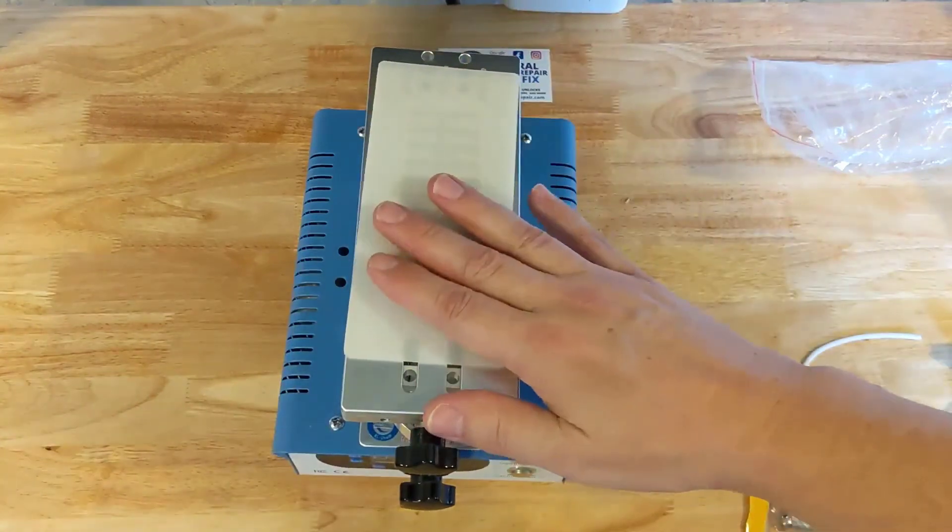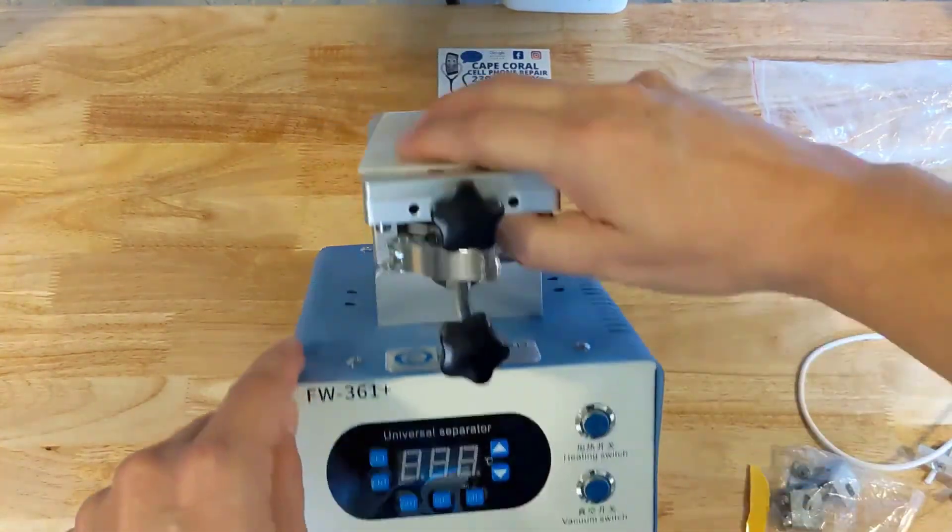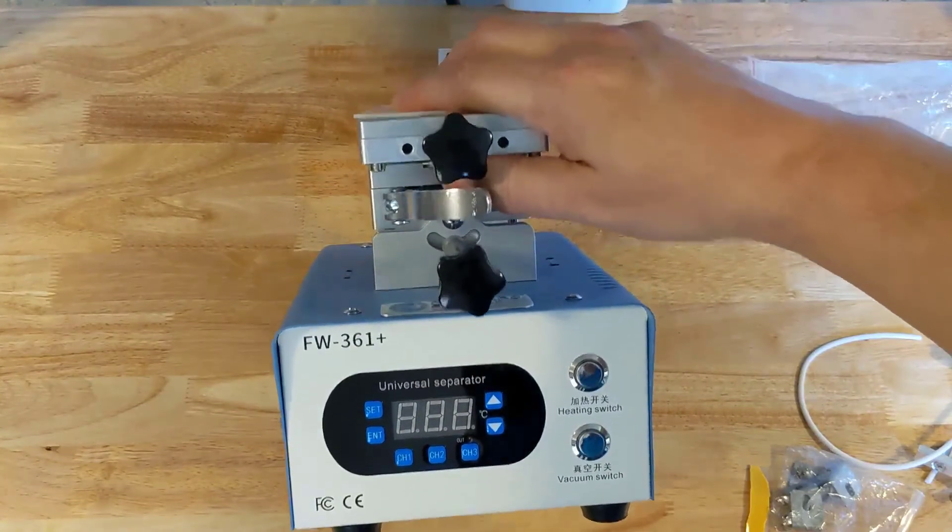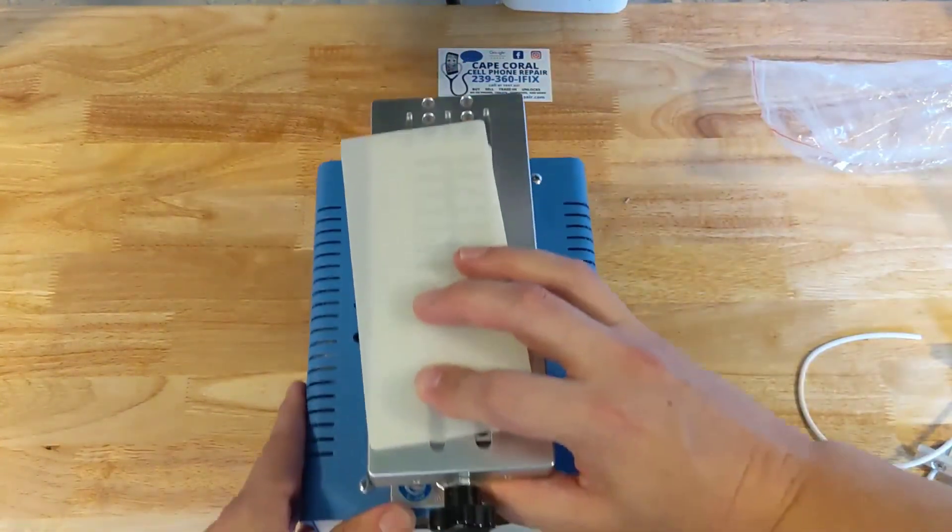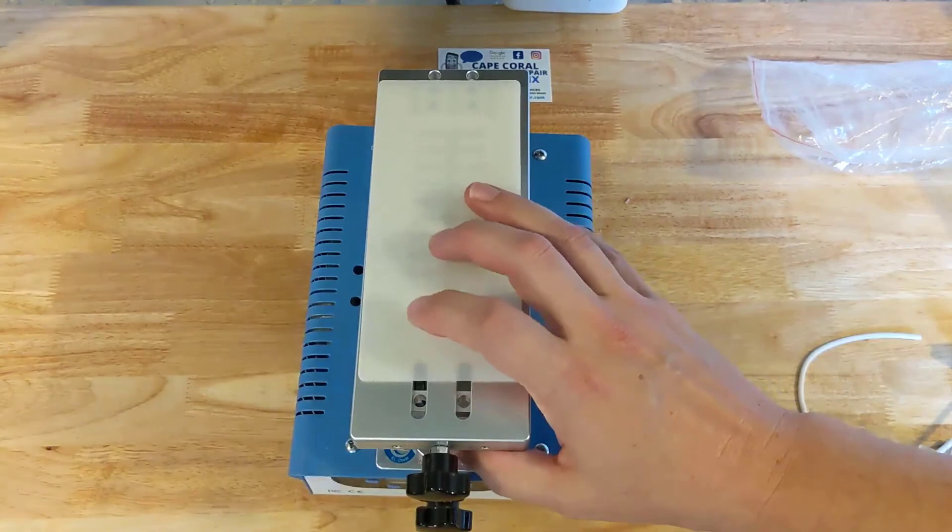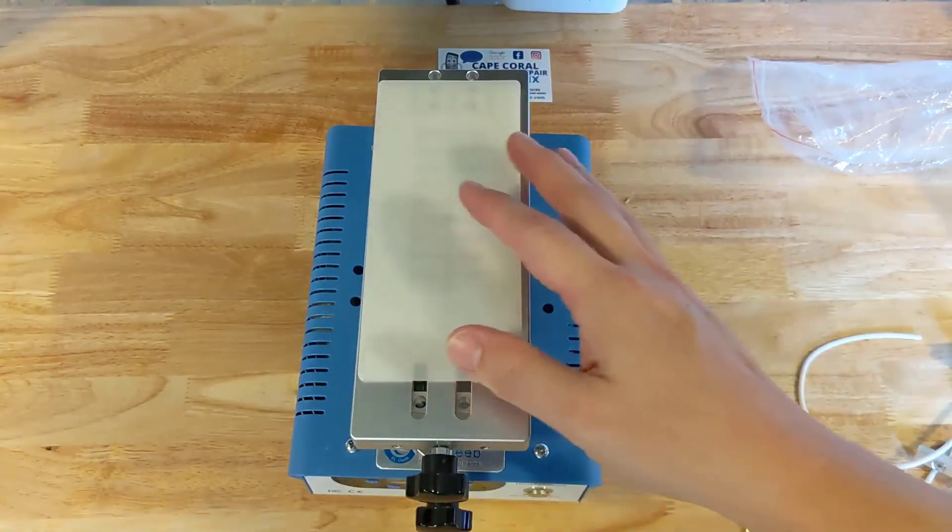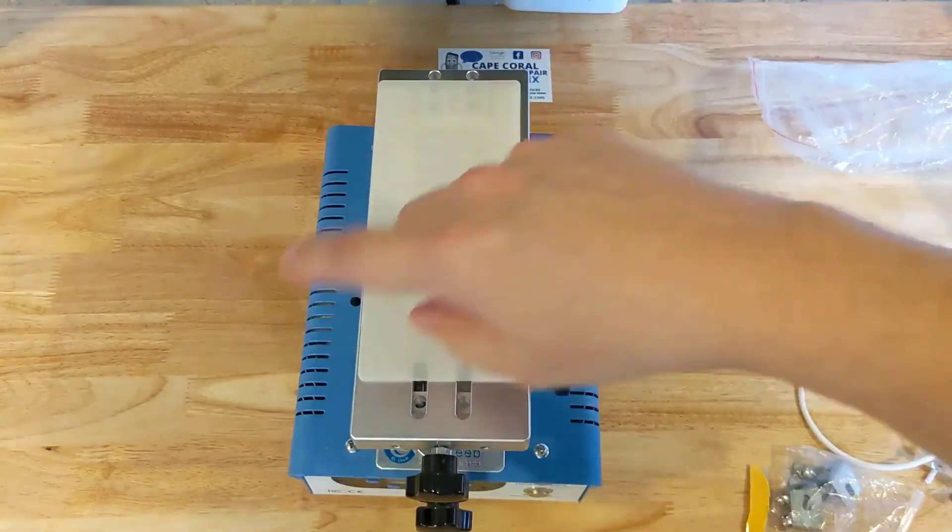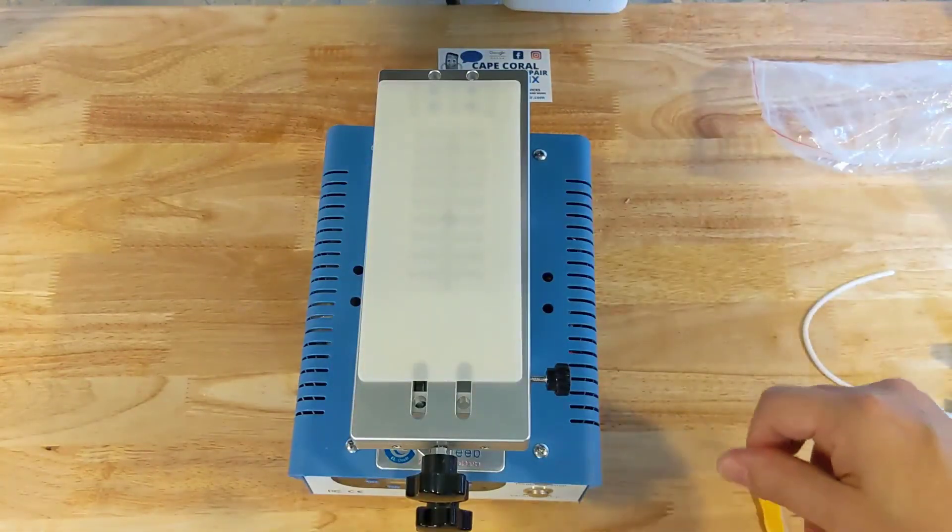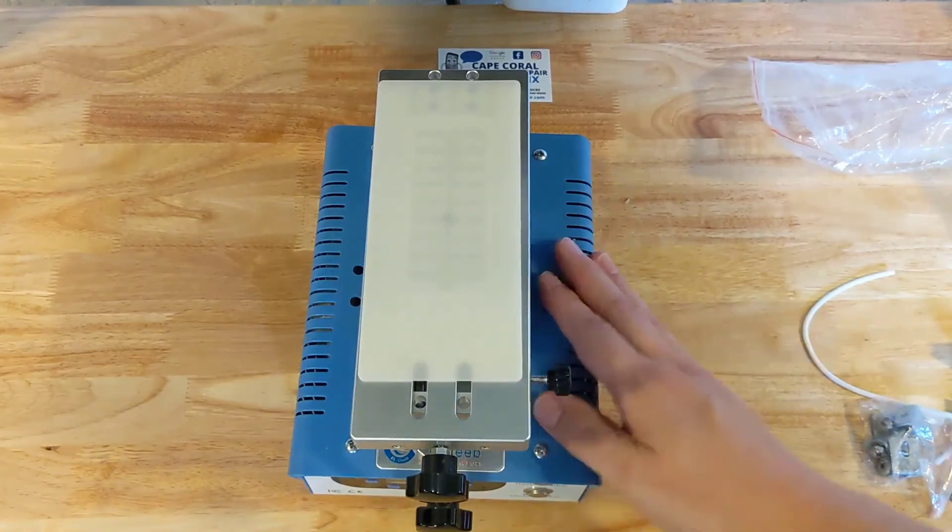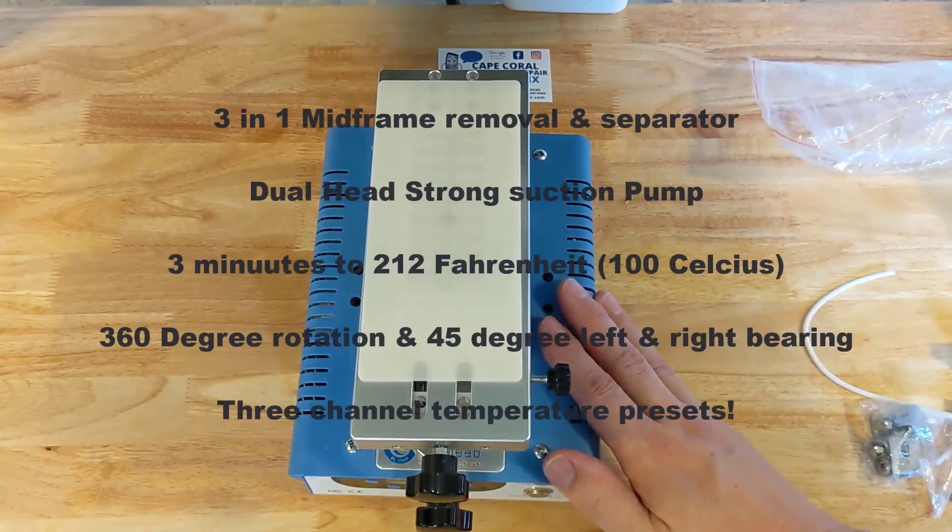Once again, this is the Forward FW361 Plus machine. It goes from 0 to 100 degrees Celsius in three minutes or less. That's 0 to 212 degrees Fahrenheit. It's got the angling, it's got the 360 degree turning radius. And we're going to be making a video pretty soon on all the features and what we like about it shortly after uploading this video.